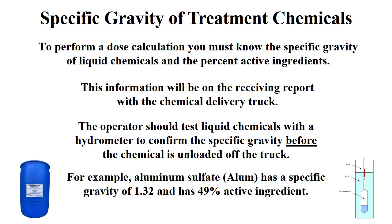Mistakes can happen at the chemical manufacturing plant or the chemical loading station. The best time to discover a problem with a chemical is while it is in the truck, not in your bulk tank. An example of a specific gravity is 1.32 for aluminum sulfate, or alum. Alum is a coagulant and helps remove the turbidity from the water. The specific gravity of 1.32 means that alum is 32% heavier than water. Alum is 49% aluminum sulfate.